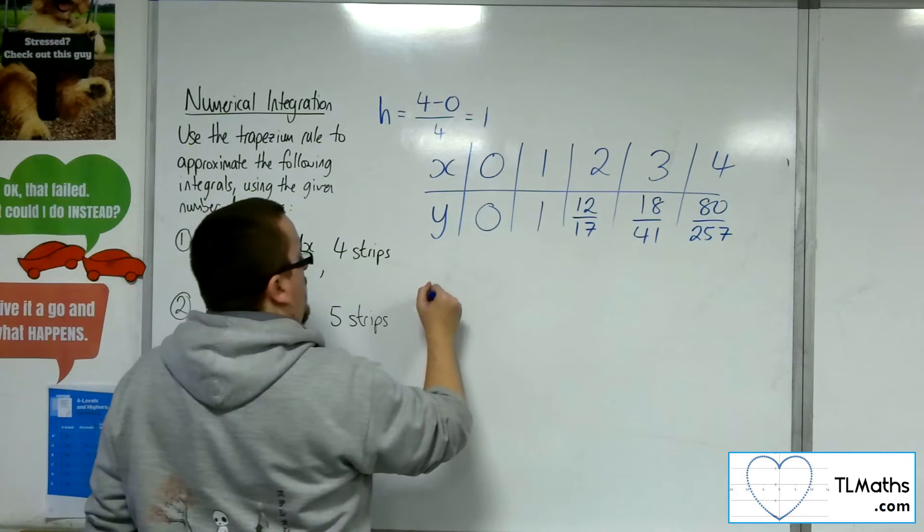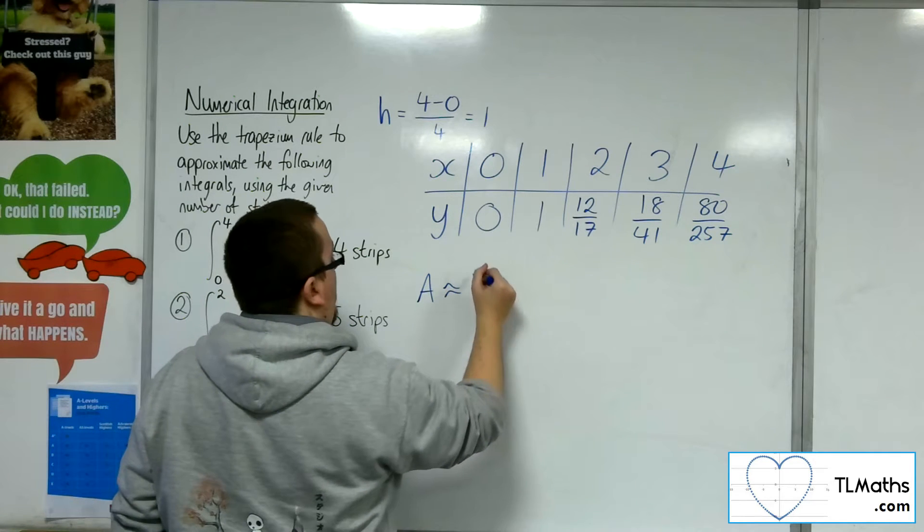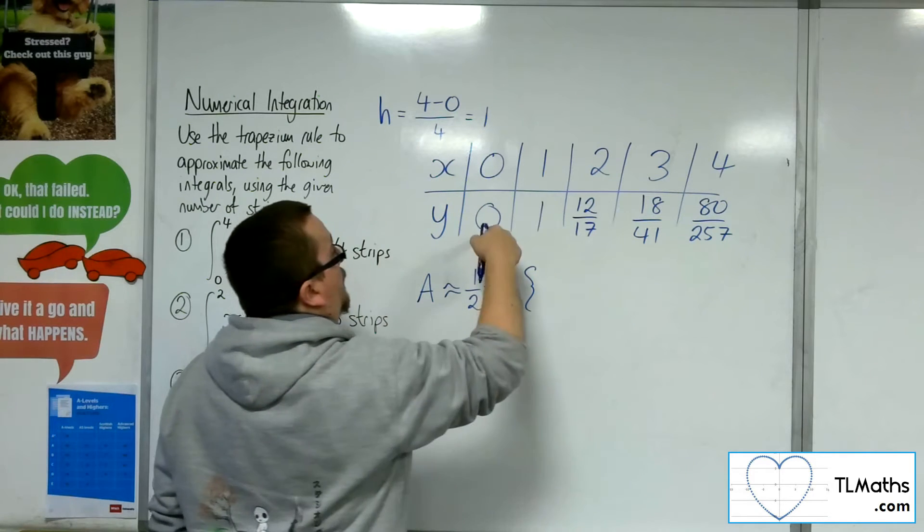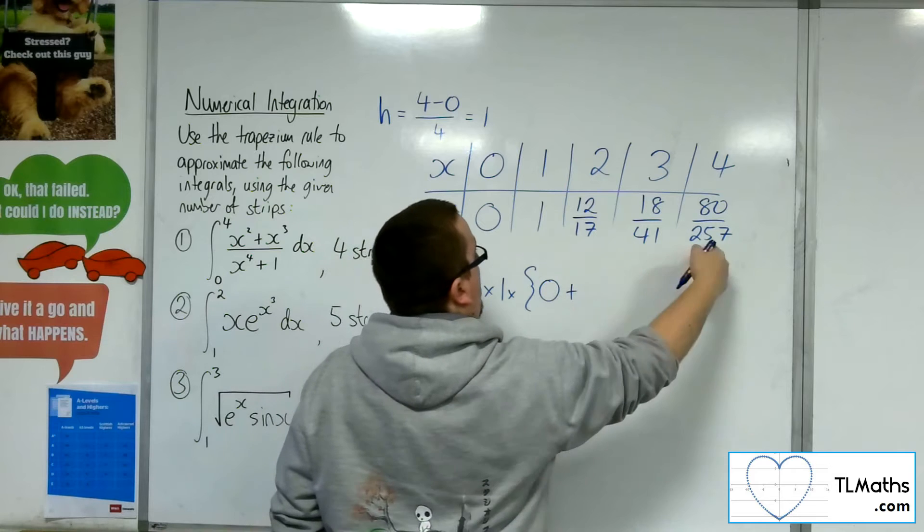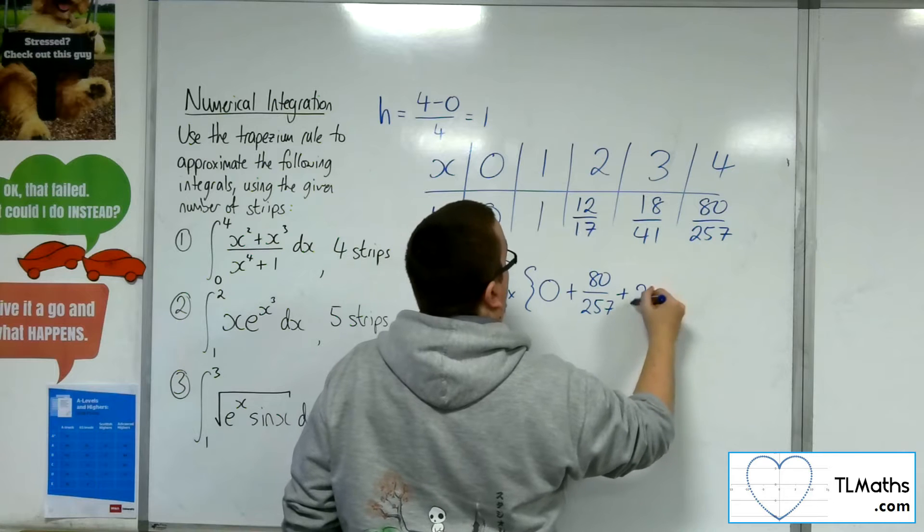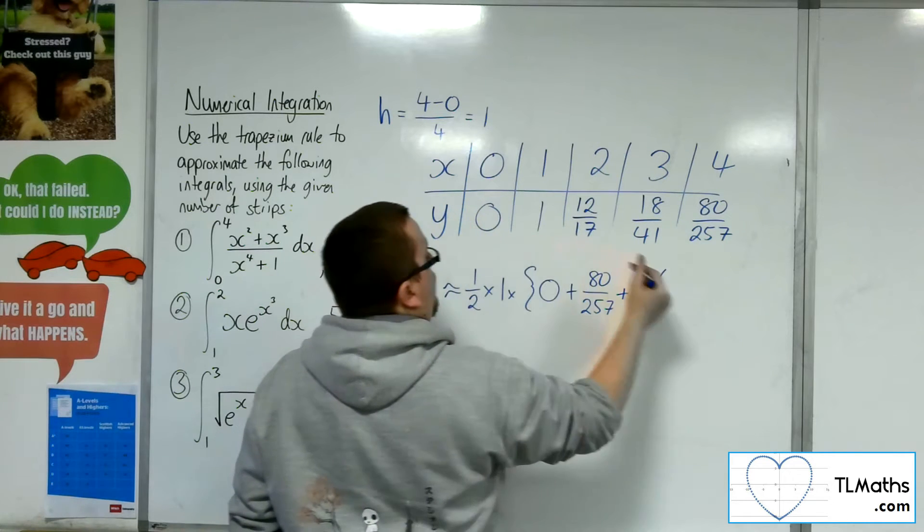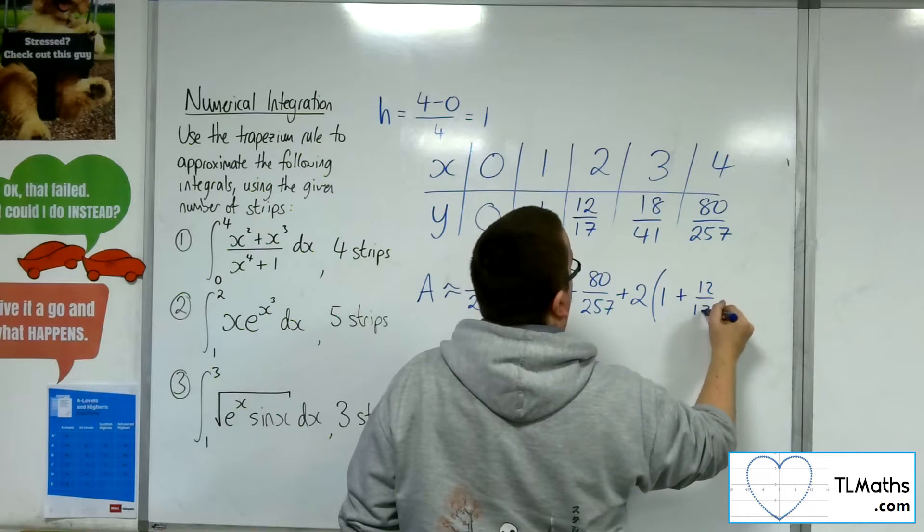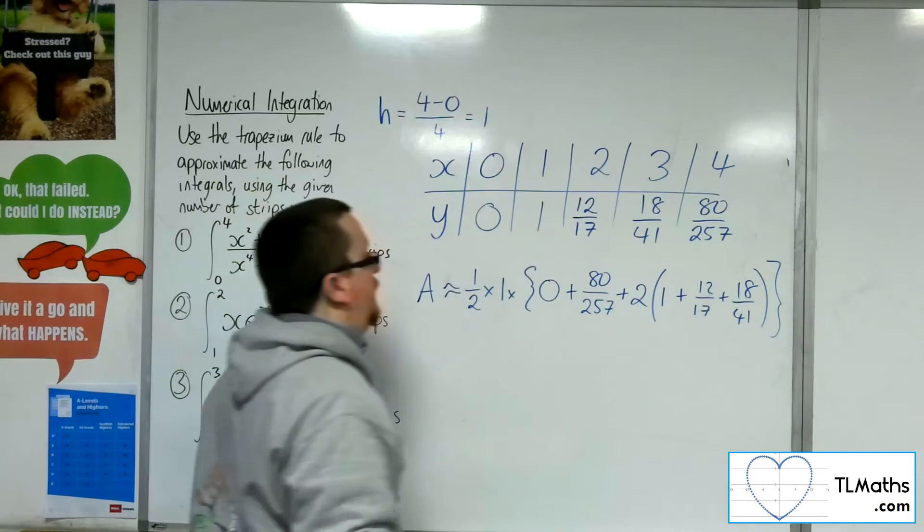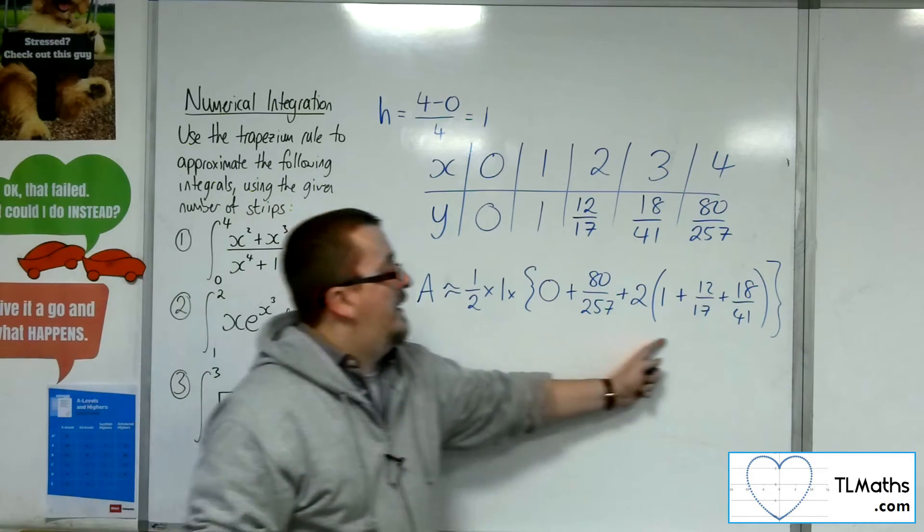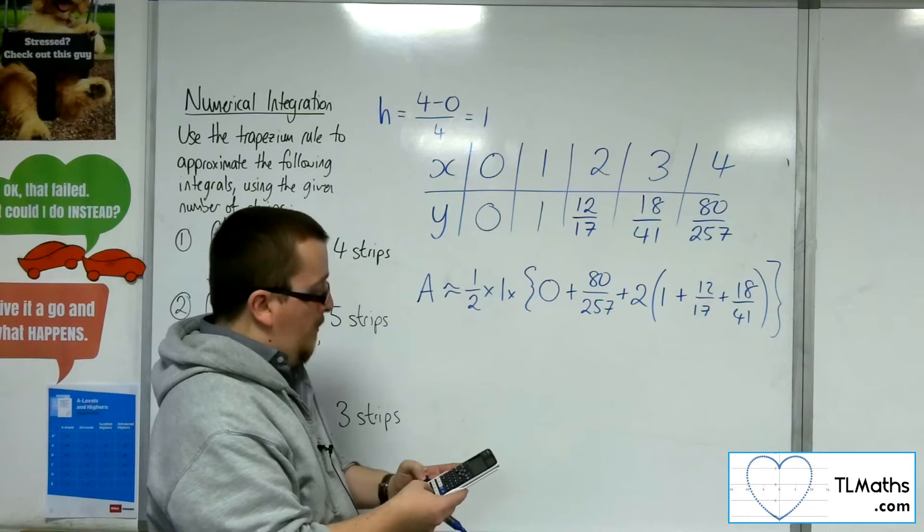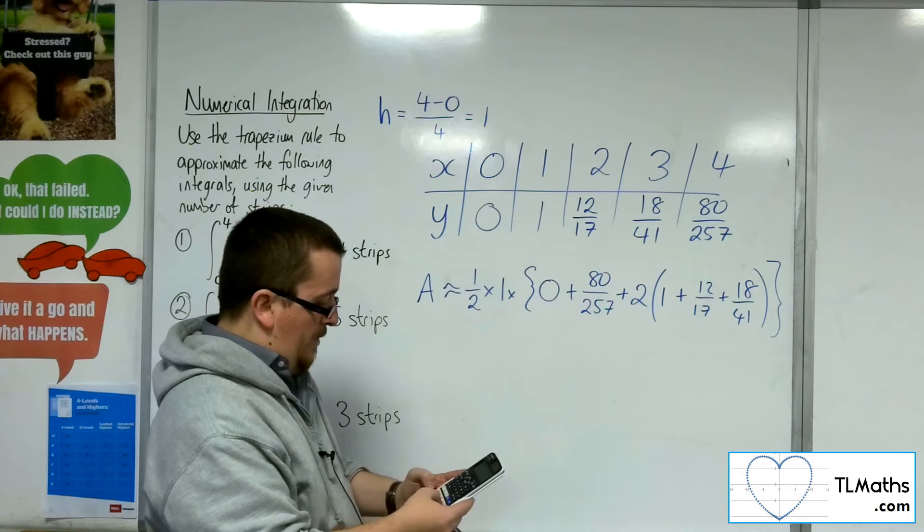So the area is approximately one-half times h times the first plus the last plus two lots of the rest. So one plus twelve-seventeenths plus 18 over 41. So in calculating this, I usually work from that bracket and work my way outwards.